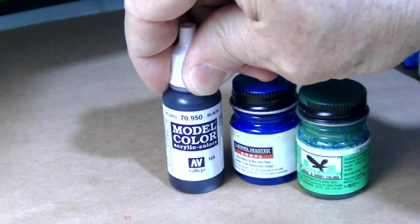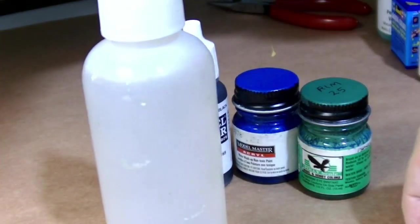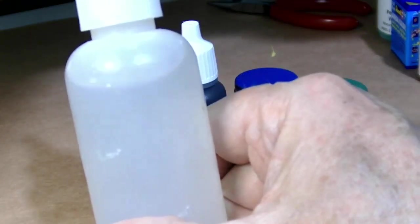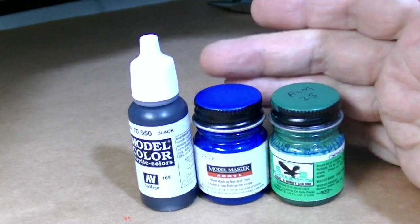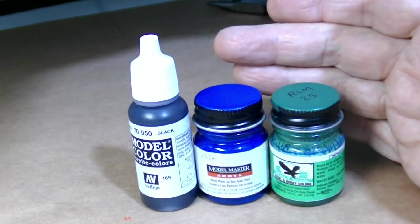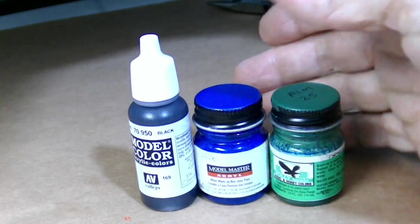Vallejo Model Color, great paint. What do we thin them with? Water, distilled water, not Windex. I don't know what it is about the Windex—it reacts to something in these paints and creates bubbles and will mess up your finish.